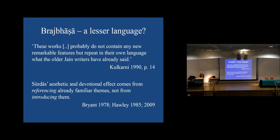The other question is the idea of Braj Bhasha — or the vernacular in general — as a lesser language. As we see in Kulkarni's study of Jain Ramayanas, at some point he lists more recent early modern texts and suggests they probably do not contain any remarkable new features, but repeat in their own language what older Jain writers already said — in Sanskrit or Prakrit.